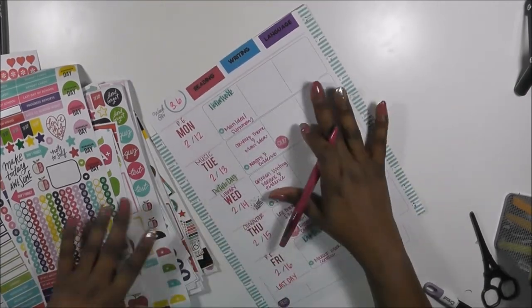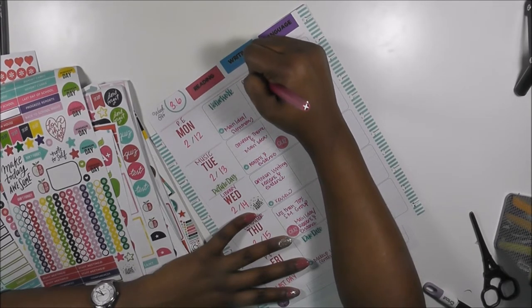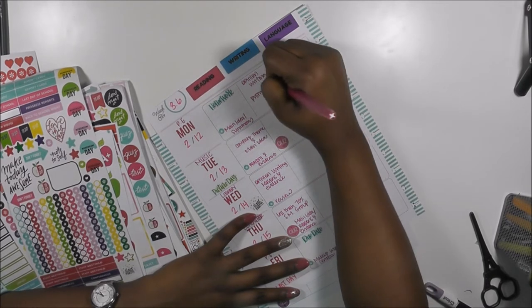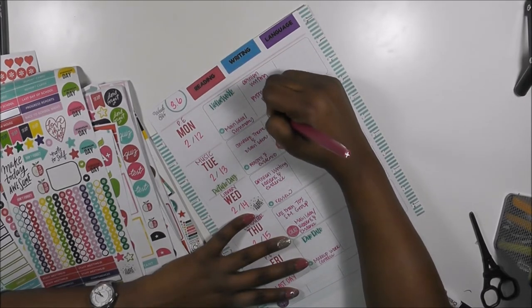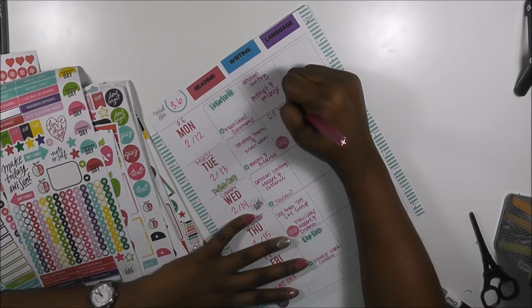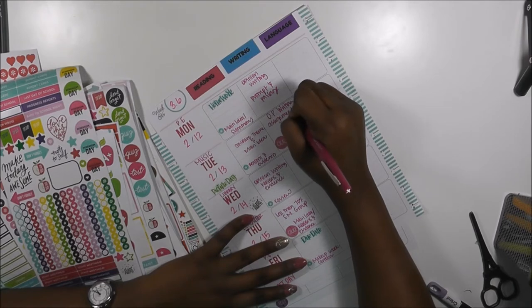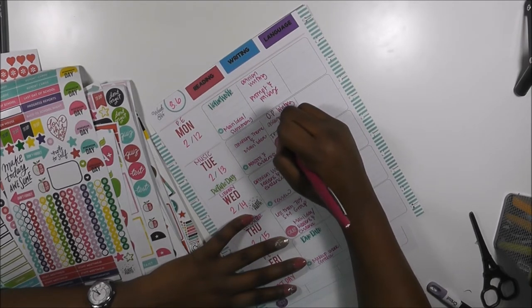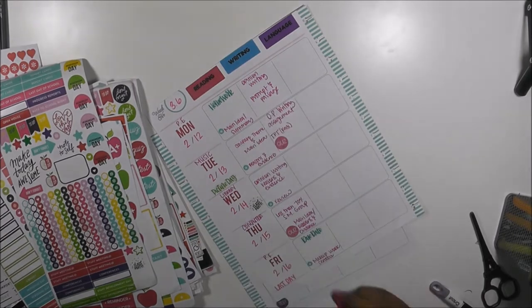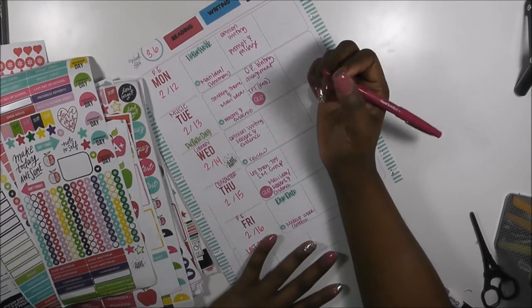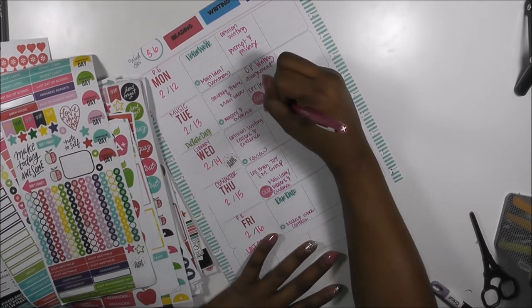For writing this week, we're going to be looking at opinion writing, prompt and passage. So opinion writing assignment, and there's a TPT product that I want to use, and I'm just going to put the person's name whose product I'm using so I can remember. We're going to revise and edit.